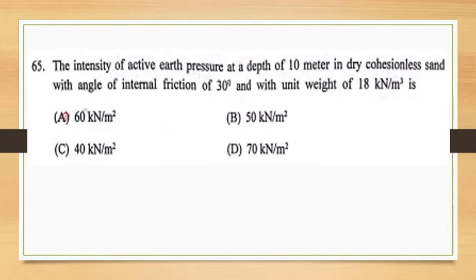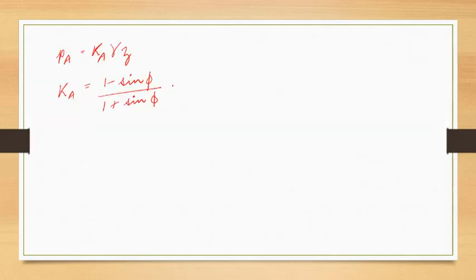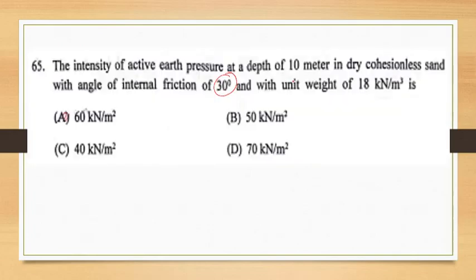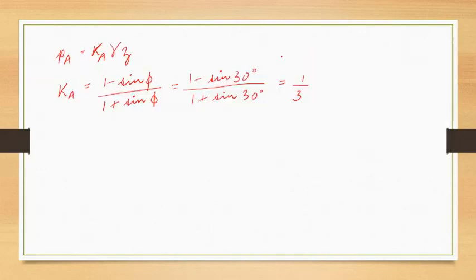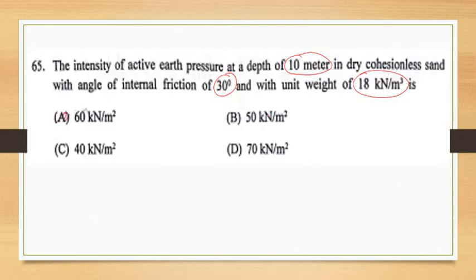The value of φ is given as 30 degrees, so k_a = (1 − sin 30°) / (1 + sin 30°) = 1/3. γ is the unit weight of soil given as 18 kN/m³ and z is the depth given as 10 meters. Therefore p_a = (1/3) × 18 × 10 = 60 kN/m². Therefore the answer is option A, that is 60 kN/m².